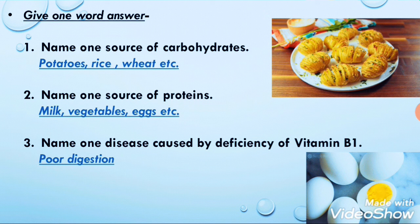Next: give one-word answers. First — name one source of carbohydrate. Sweet food items contain carbohydrate. So you can write potatoes, rice, or wheat, which we commonly eat. Anyone of them can be written.